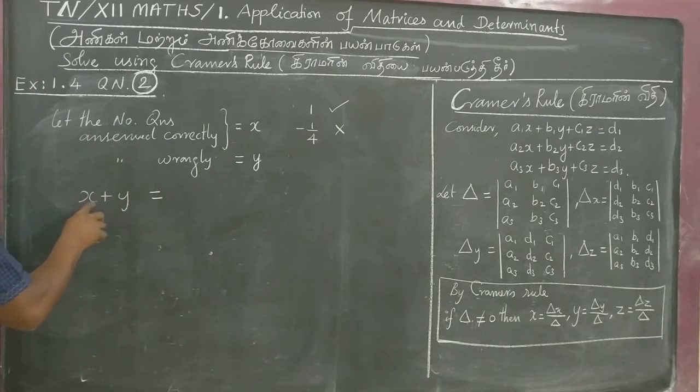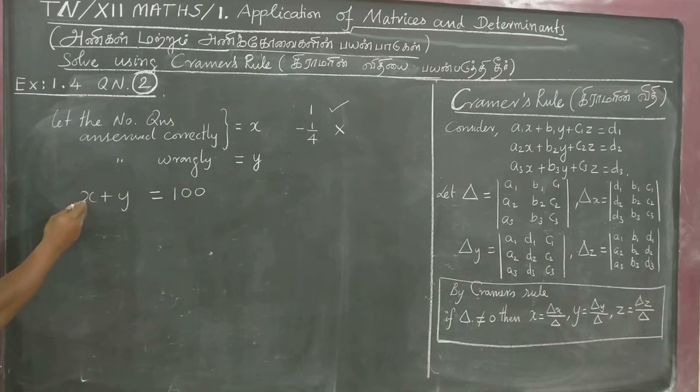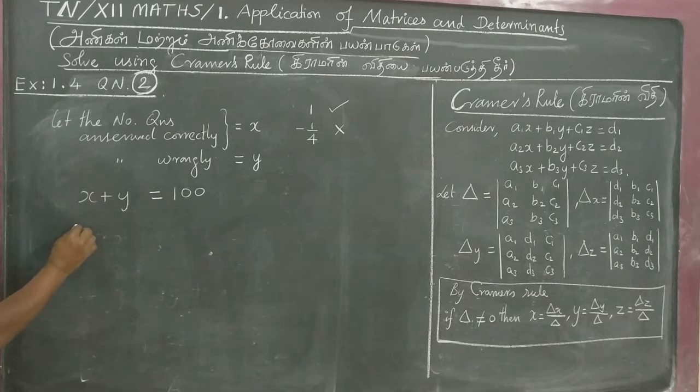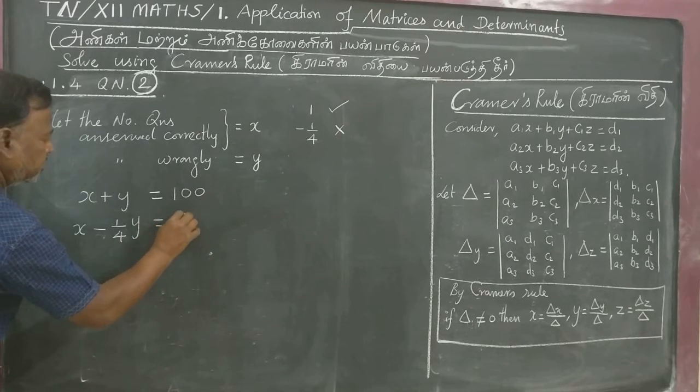Right questions plus wrong questions total 100 questions. Right question is awarded one mark, wrong question is awarded minus 1/4 mark.